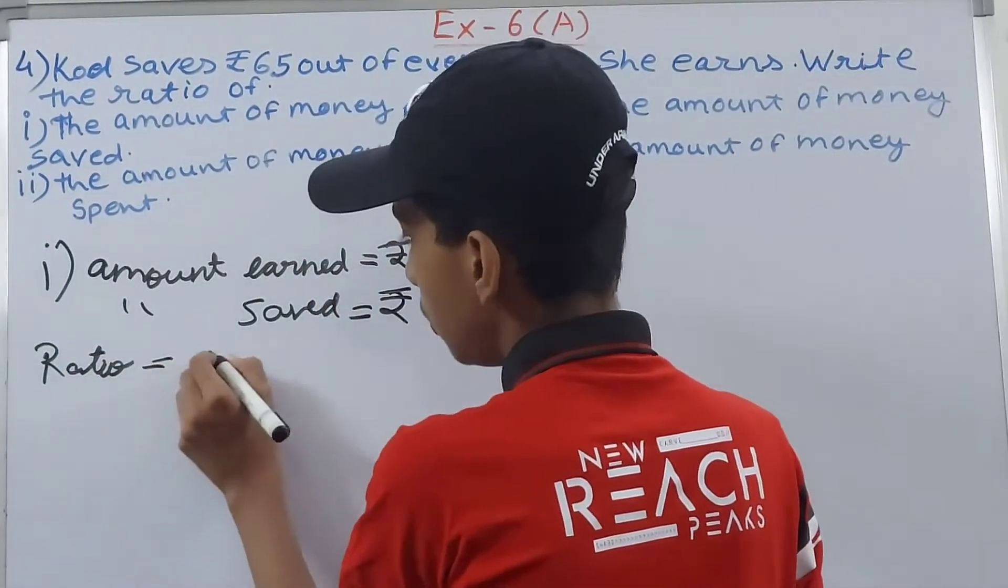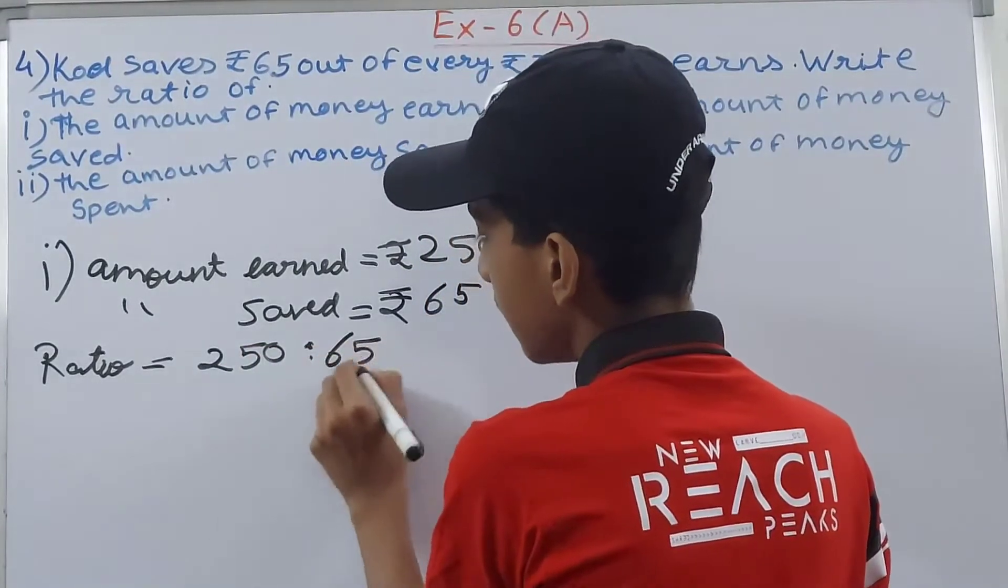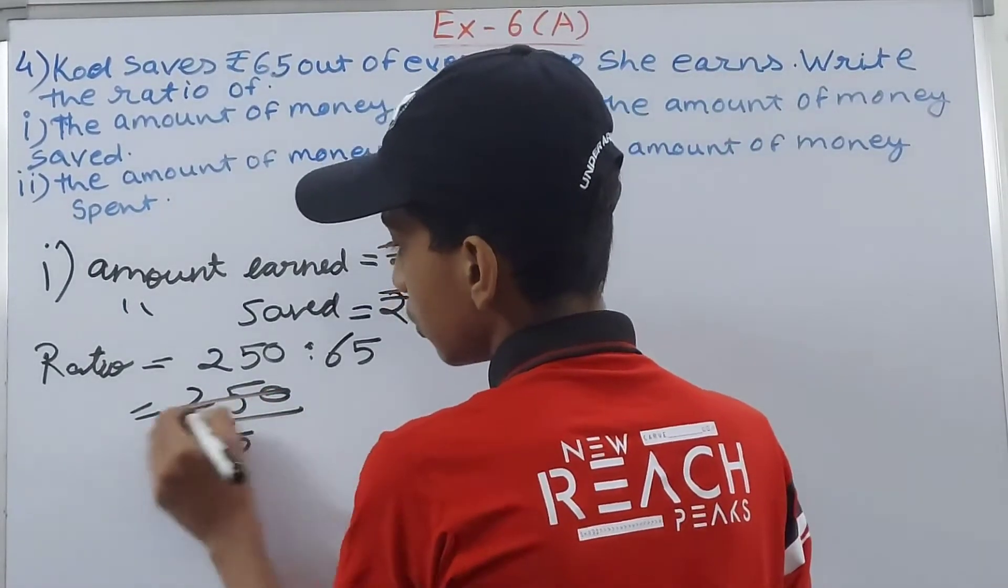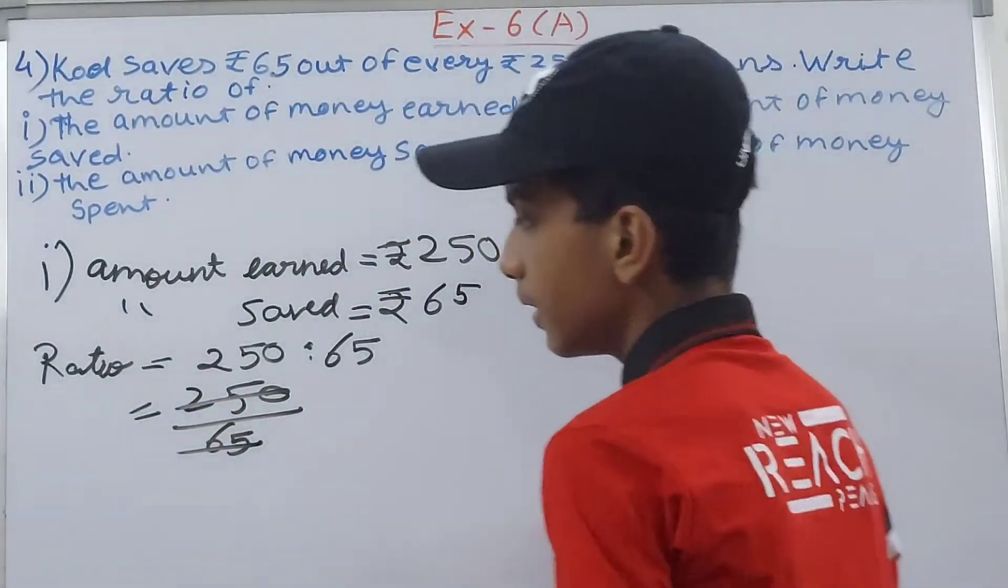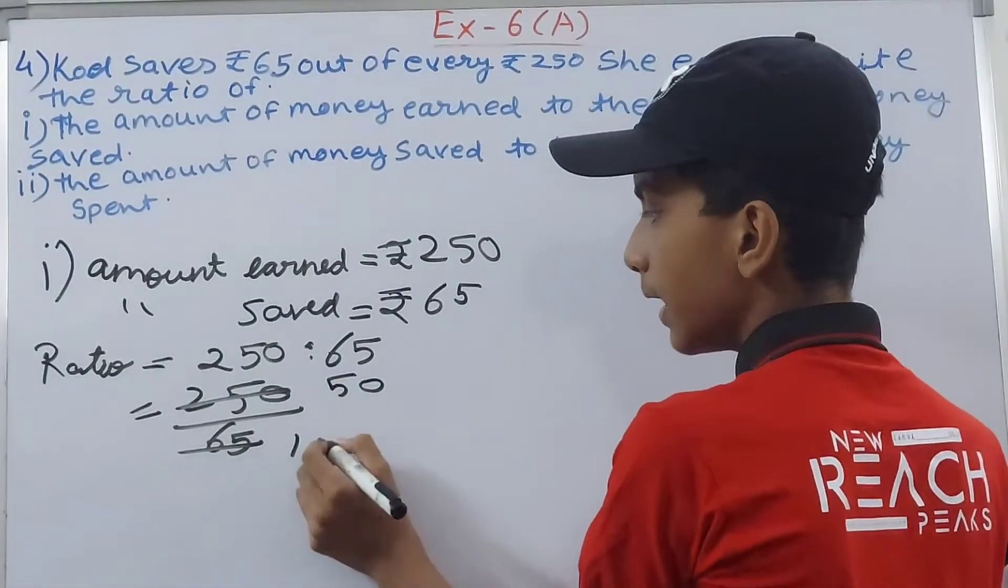It will be 250 is to 65 and we'll simplify this now. Cut this by 5, cut this by 5. This will go how many times? 50 times. This will go how many times? 13 times.